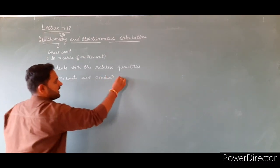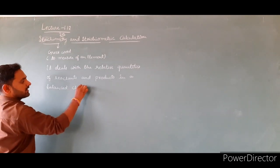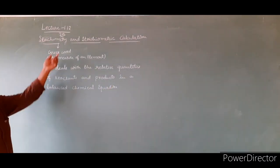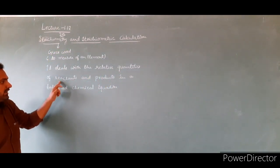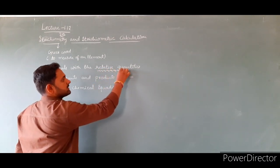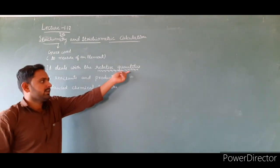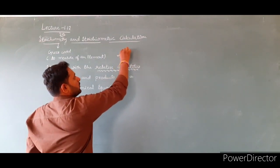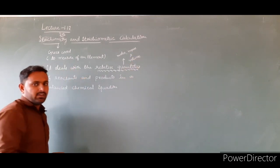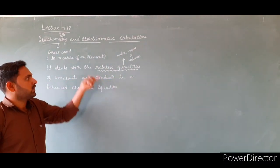The quantities in a balanced chemical reaction are large — like moles, mass and volume. The study of relative moles of reactants and products in a balanced chemical equation is called stoichiometry.